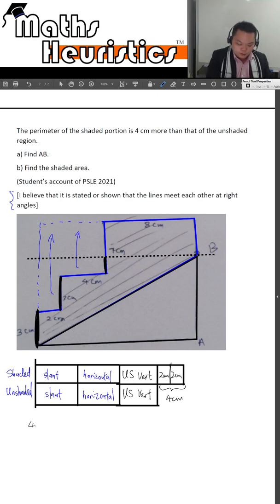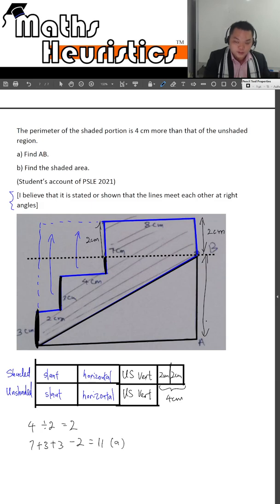We have 4 divided by 2 to give you 2. If this is 2 cm, this is 2 cm. And this entire height is 7 cm. This entire height here is 3 cm. So the length of AB plus 7 cm plus 3 cm minus 2 cm gives you 11 cm.